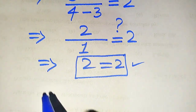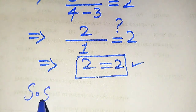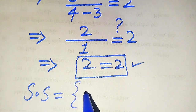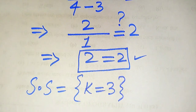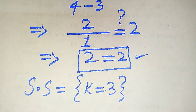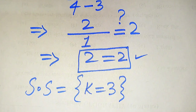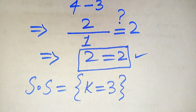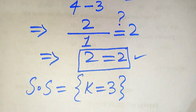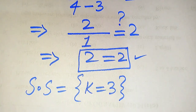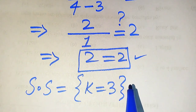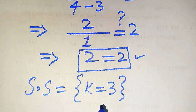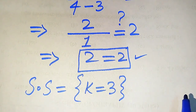We finally conclude that the solution set is k = 3. This is the only solution of the given equation. The root which does not satisfy the given equation is called an extraneous root, and the root which satisfies it is called the solution. Unfortunately we found no extraneous root here — we have only one solution, and that is k = 3, which is our final answer.